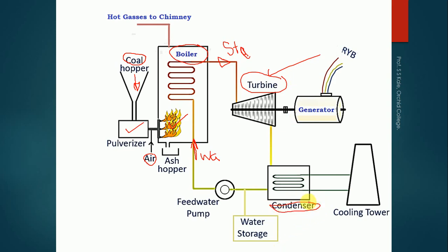The next component is the condenser. The condenser is a device which converts steam back into water through condensation. At the input there is steam, and at the output there is water. The feed water pump takes water from one side and supplies it further, completing the cycle between the boiler, turbine, condenser, and feed water pump.